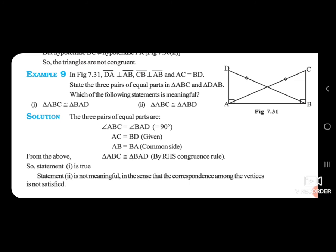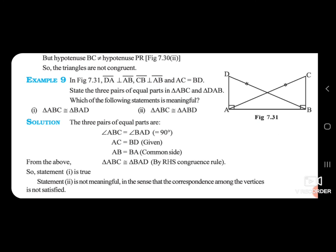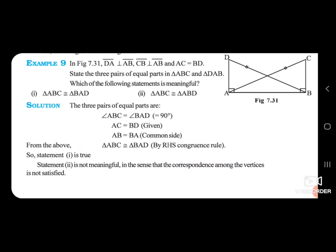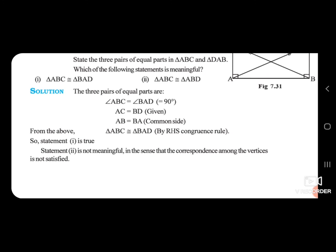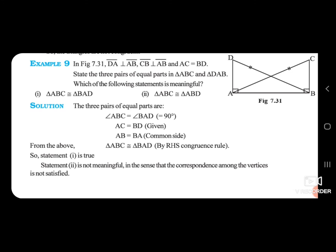So, from the above, Triangle ABC is congruent to Triangle BAD. Kaunsa rule hai yahan pe — RHS. Dekho: AC aur BD equal hain — AC aur BD hypotenuse hain, wo equal hain. Right angle chahiye hamein — angle ABC aur angle BAD dono right angle hain, wo bhi equal hain. Aur ek side chahiye — AB equals BA, dono mein common side hai. So yeh congruent hai. So statement 1 is true. Statement 2 is not meaningful, in the sense that the correspondence among the vertices is not satisfied.